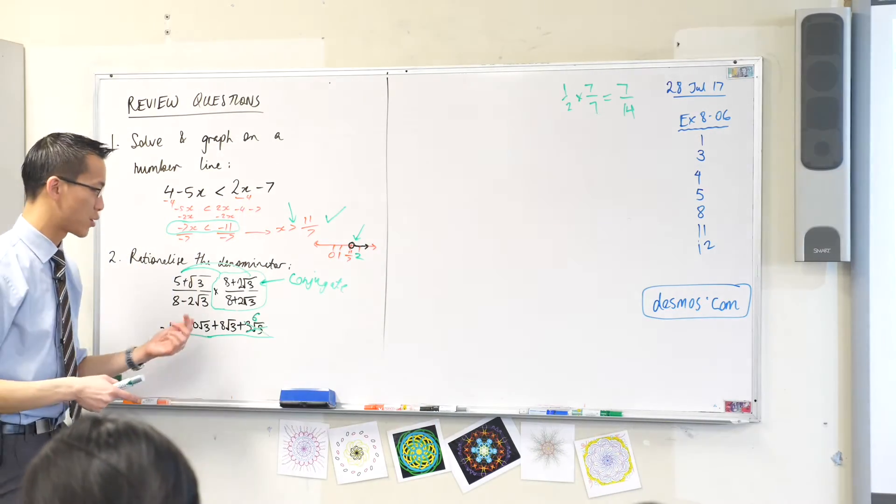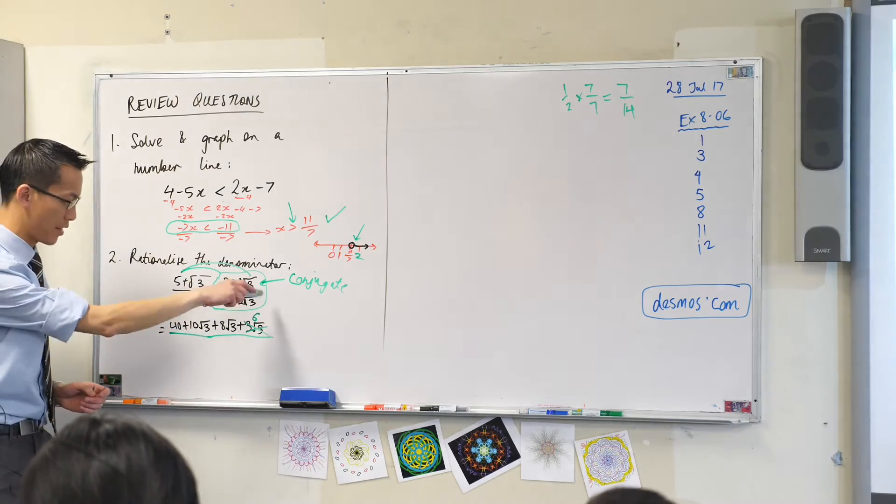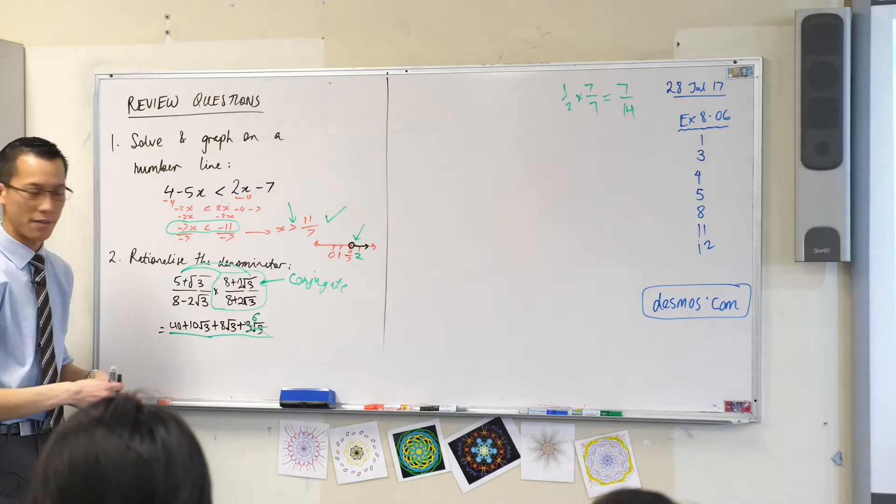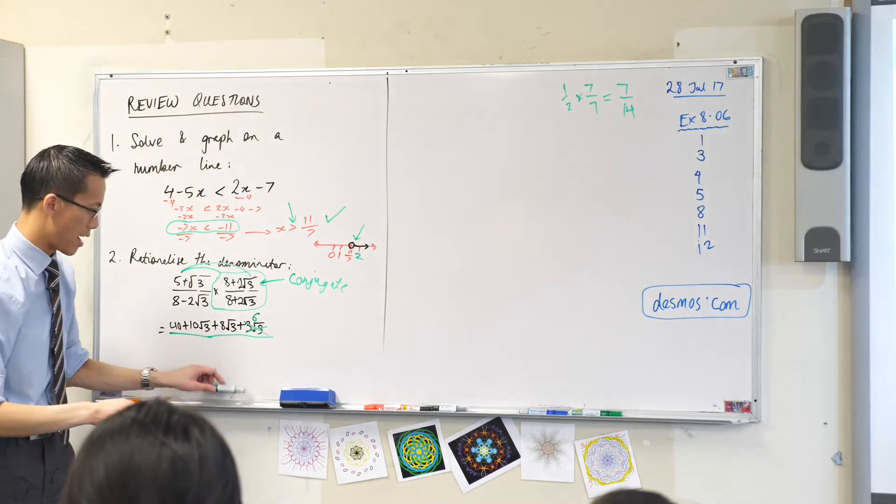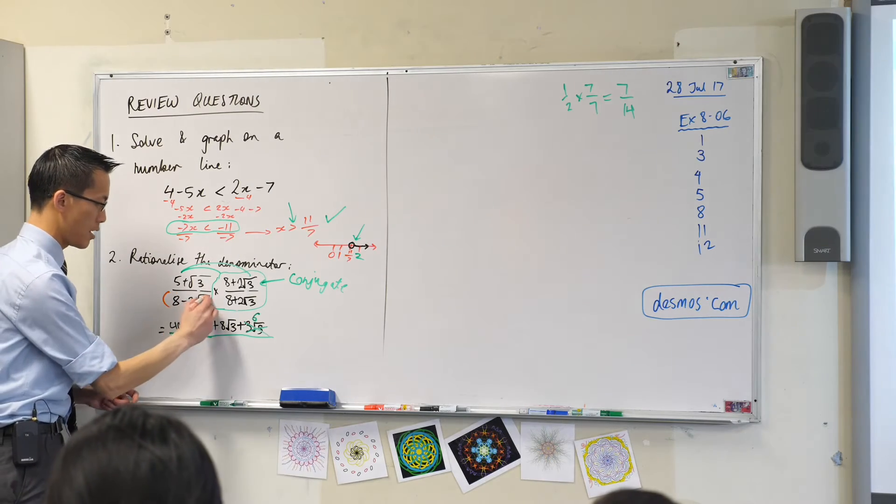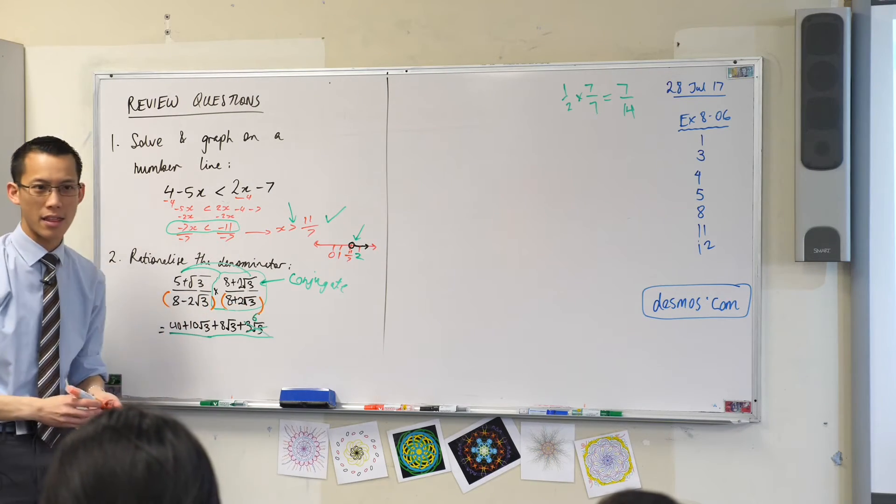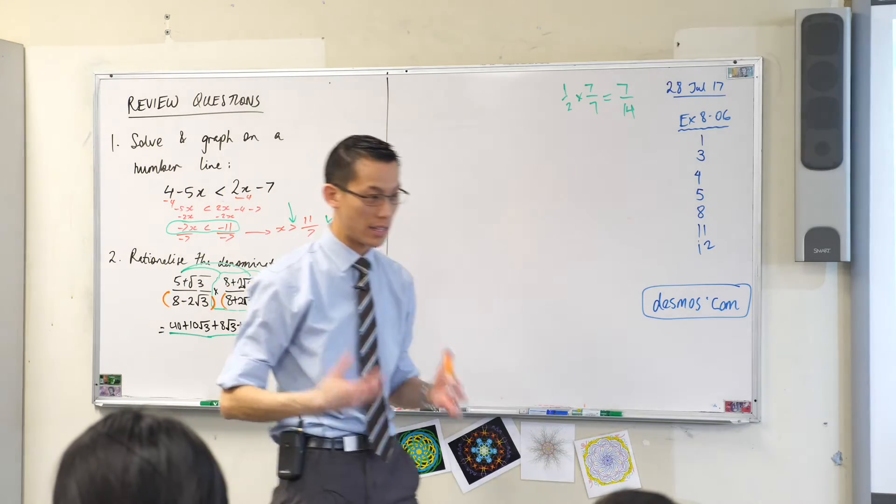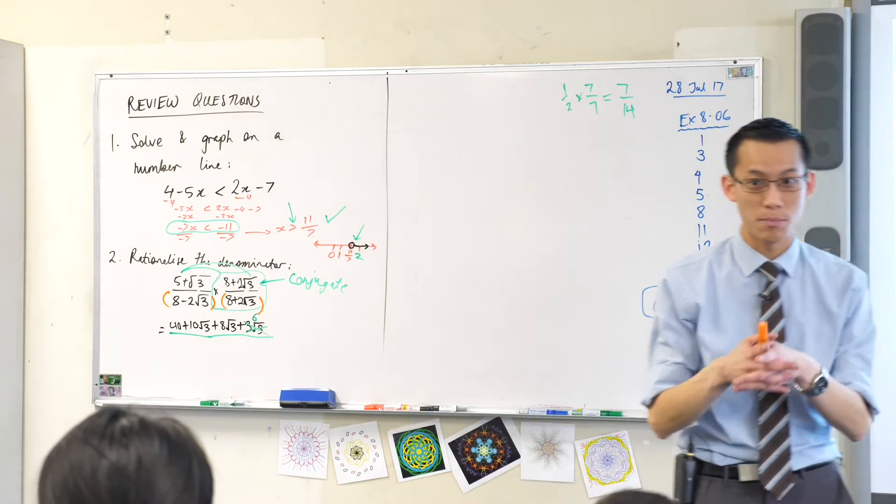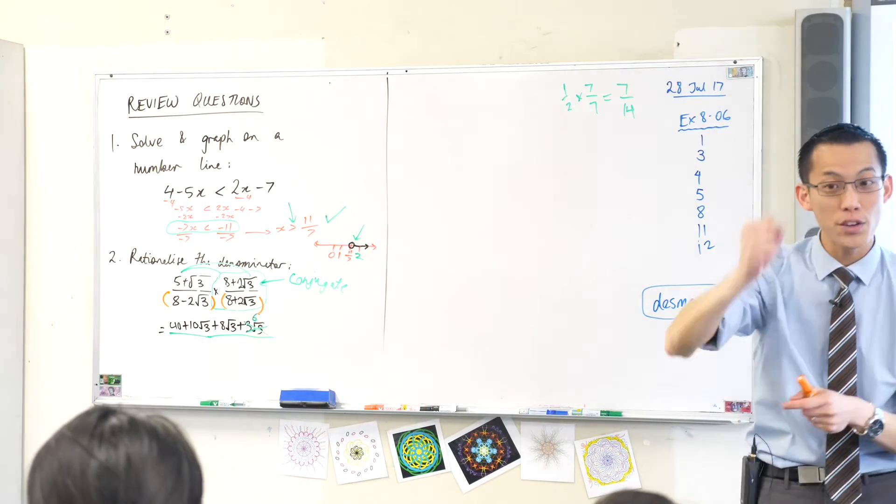We could do just what we did on the top. That would work just fine. Pair everything up, you'll get 4 numbers and then simplify out. But there's a reason why we chose this and this together. They're related in a special way. Does anyone remember what's the special relationship between them? Yeah, Brian. Nailed it. Difference of two squares.